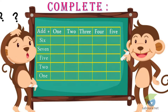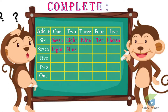The answer: 6 plus 1 = 7. 6 plus 2 = 8. 6 plus 3 = 9. 6 plus 4 = 10. 6 plus 5 = 11. 7 plus 1 = 8. 7 plus 2 = 9. 7 plus 3 = 10. 7 plus 4 = 11. 7 plus 5 = 12. 5 plus 1 = 6. 5 plus 2 = 7. 5 plus 3 = 8. 5 plus 4 = 9. 5 plus 5 = 10.